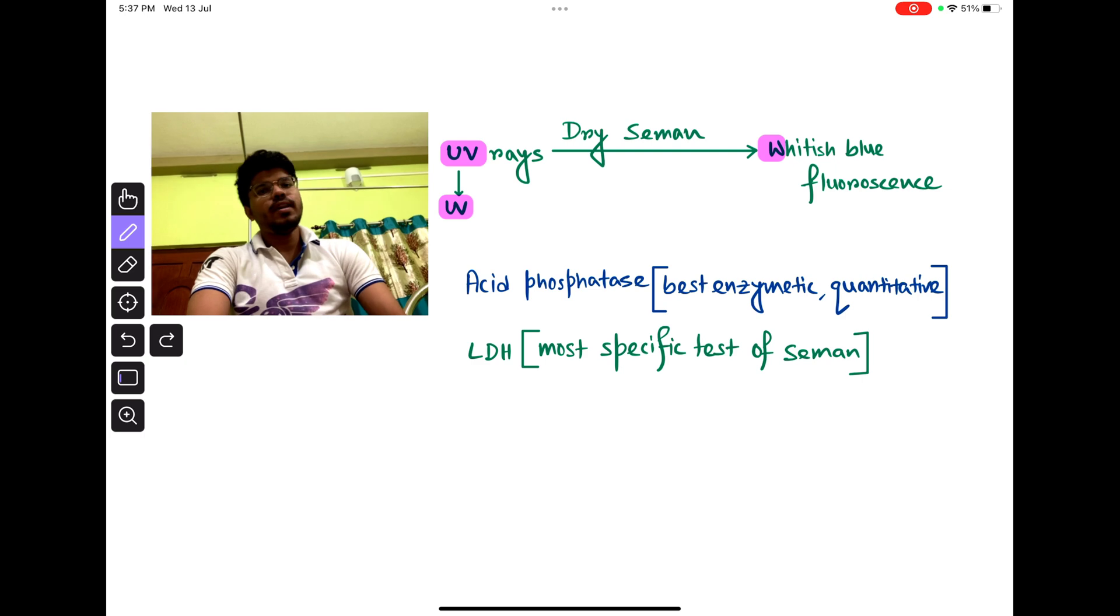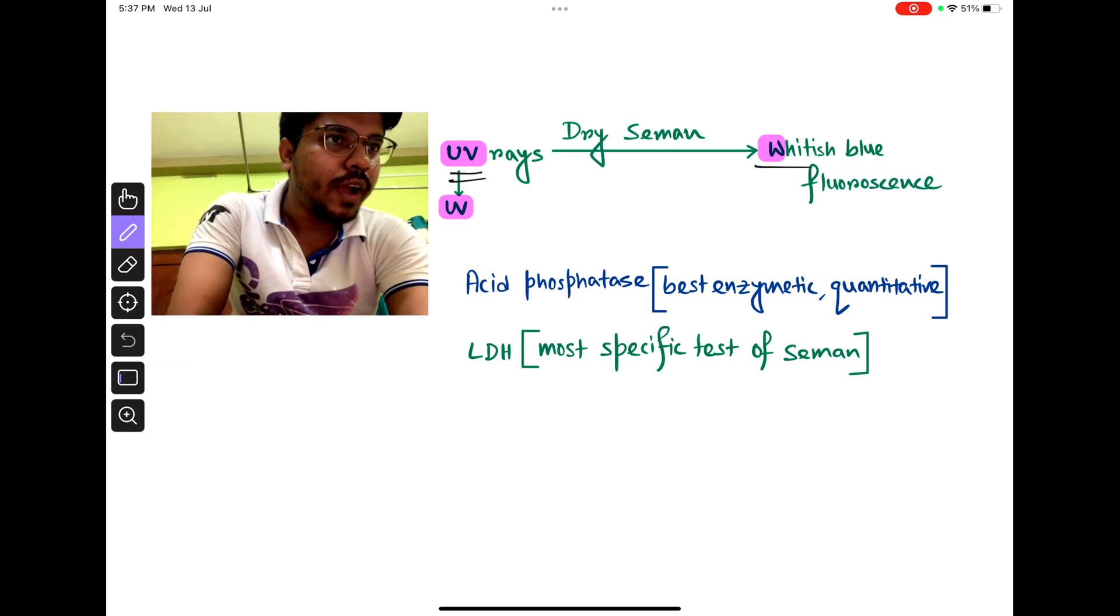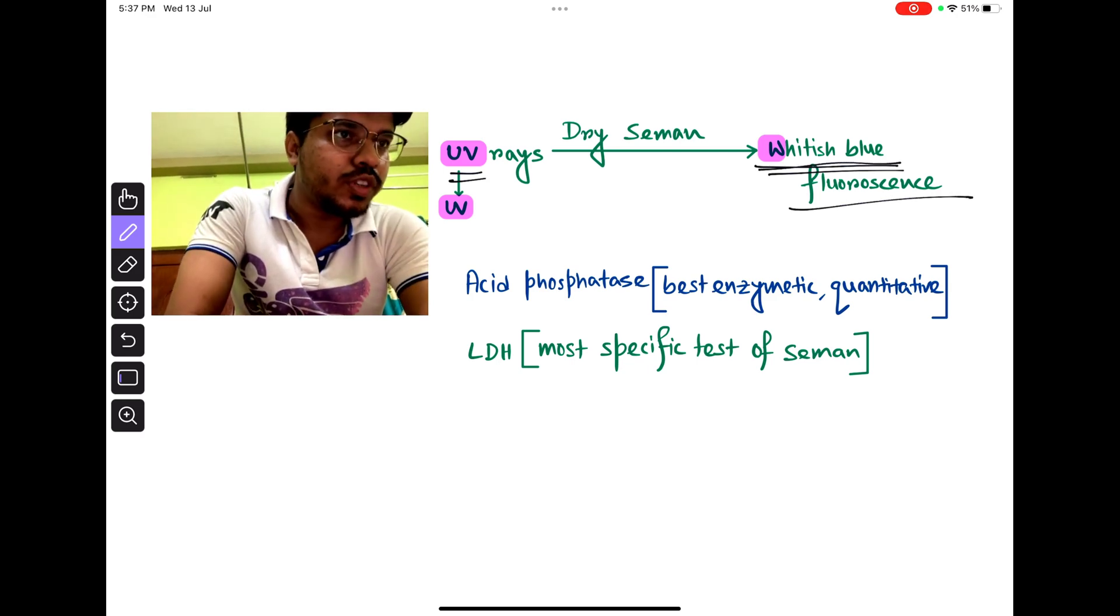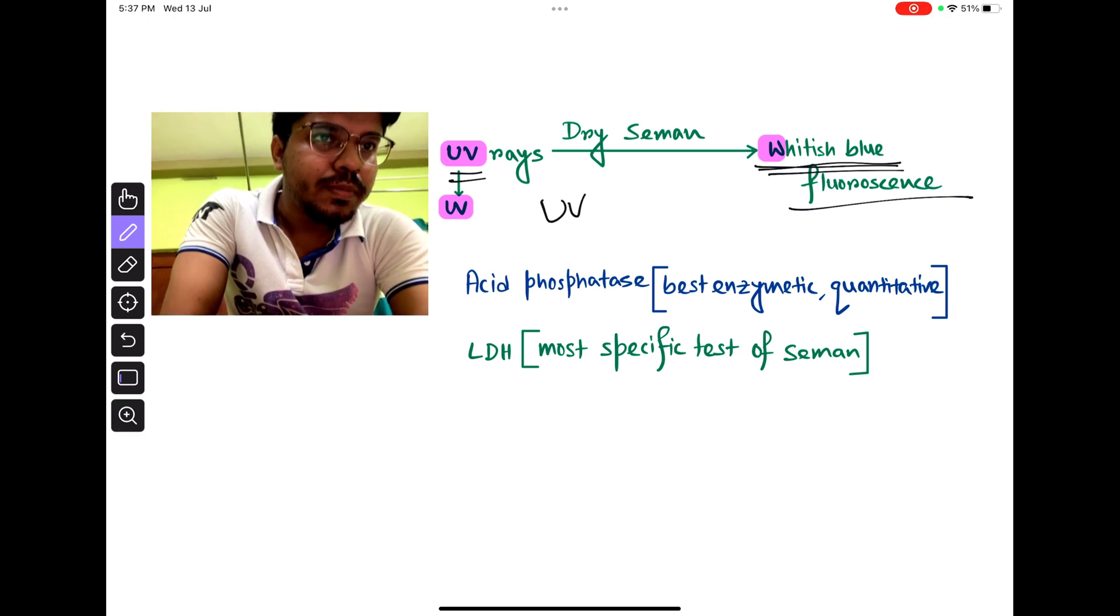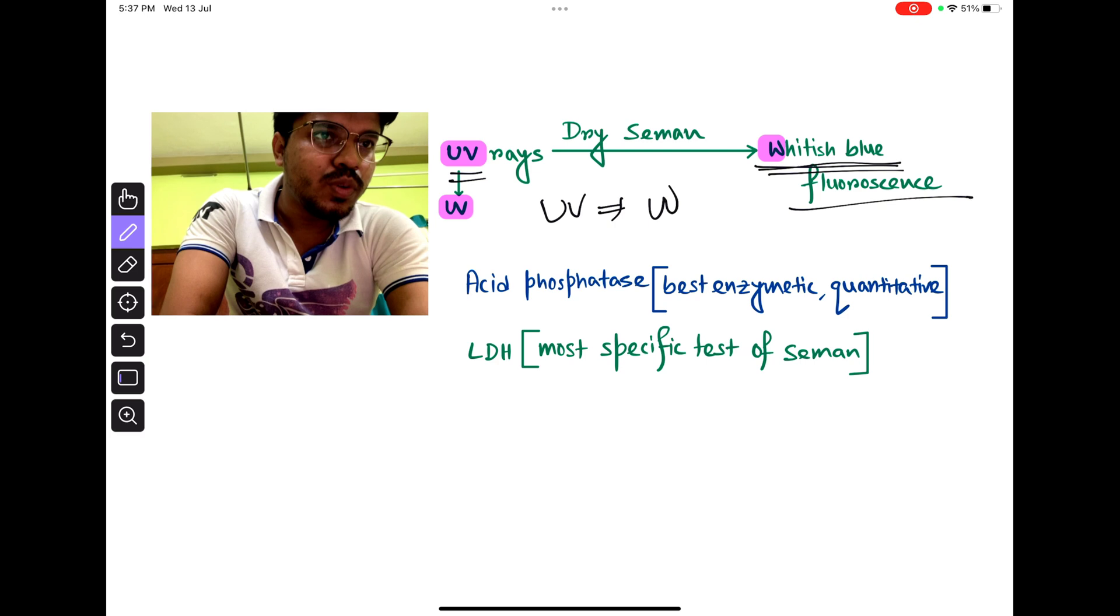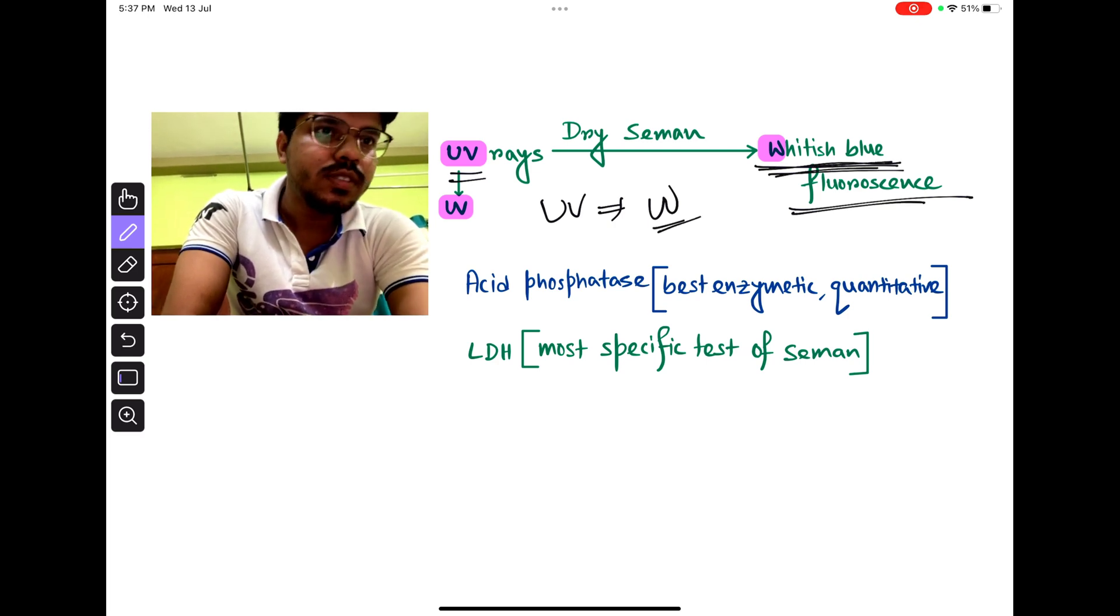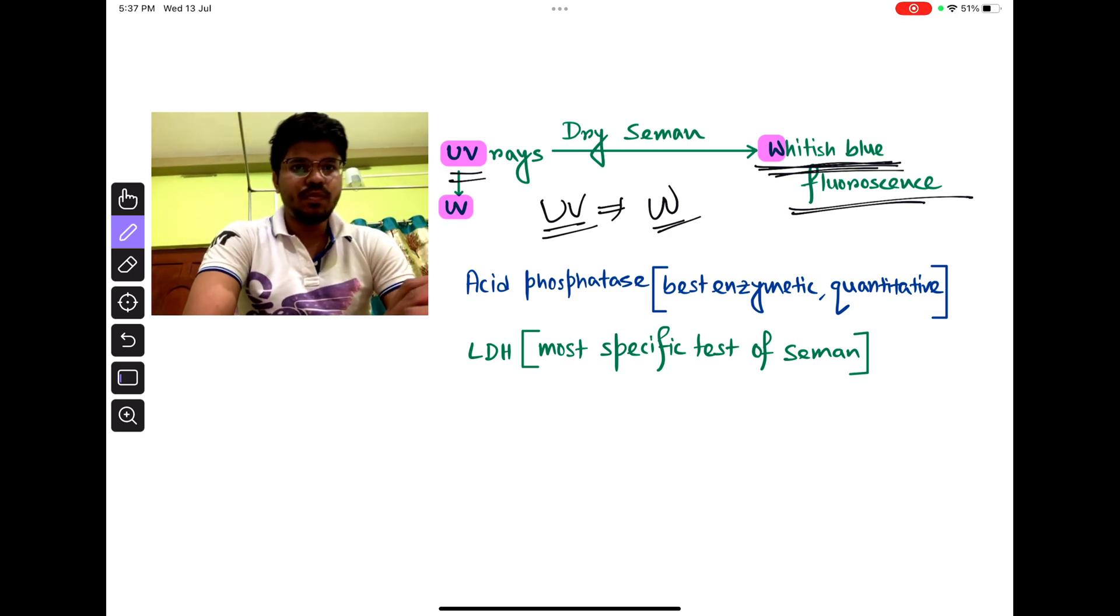Seminal stains can be detected by UV rays also. In UV rays, seminal stains are whitish blue. That is whitish blue fluorescence. How to remember it? UV, just like W. So W for whitish blue fluorescence, UV. In UV ray, whitish blue fluorescence is seen.